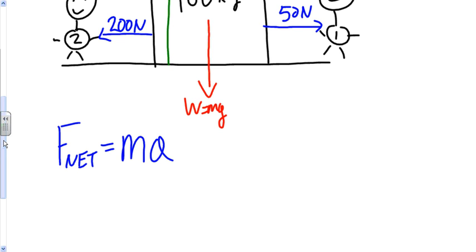We have a 200 newton force going to the left. I'll use a vector arrow like so. And we have a 50 newton force going to the right. I'll draw it like so.